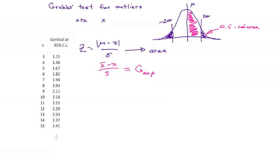I've taken a portion of Grubbs' table for the 95% confidence level and reproduced it here. And you can see that it also depends upon the number of measurements or observations that we're making, something like a t-distribution.